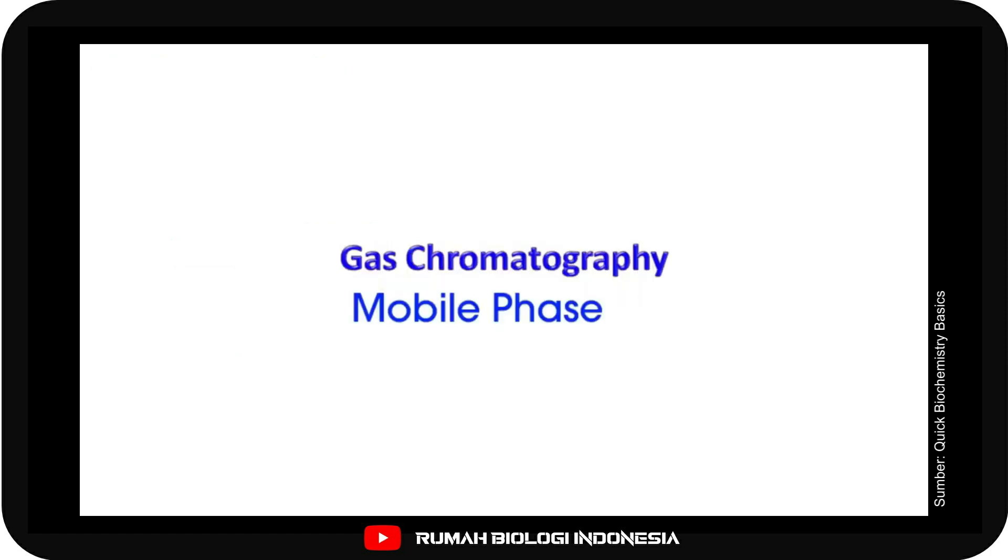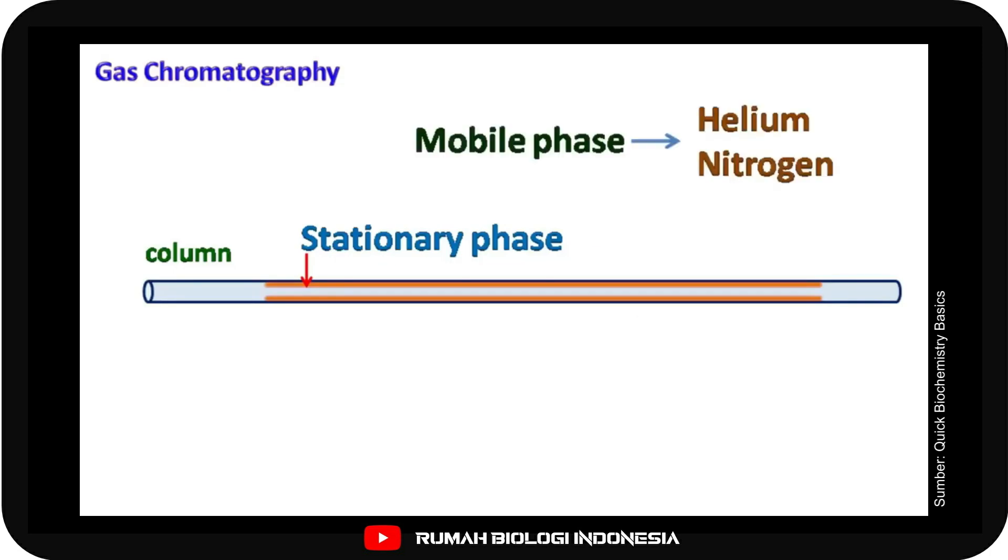The mobile phase used is usually an inert gas like helium or unreactive gas such as nitrogen.